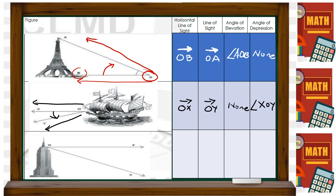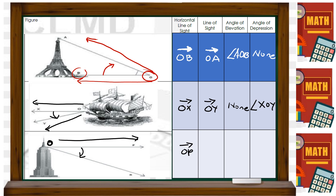For the third example, the line of sight is ray OP, which is the horizontal. The line going below — the slanted ray — is ray OR. Since it's going down, there's no angle of elevation. The angle of depression is angle POR.